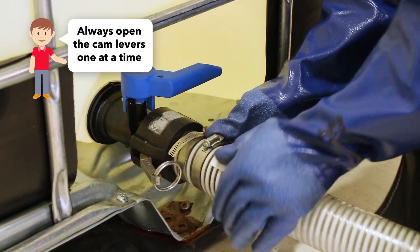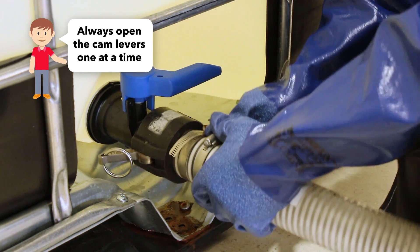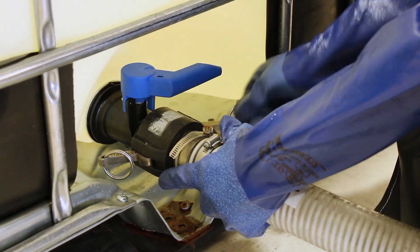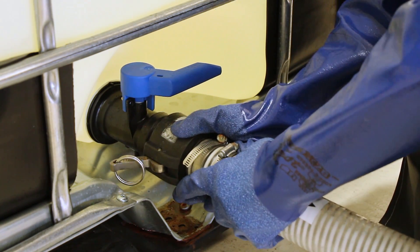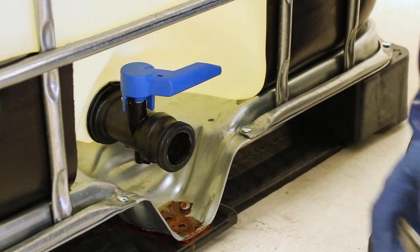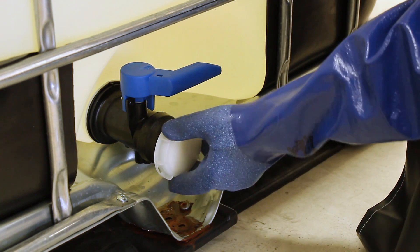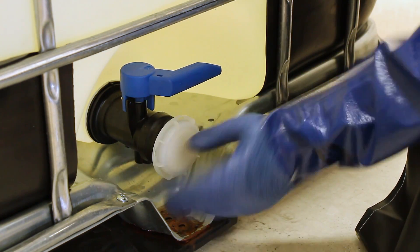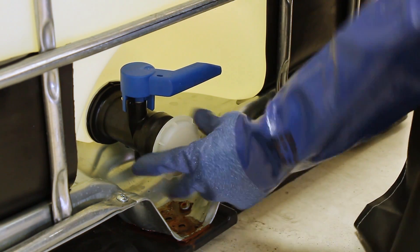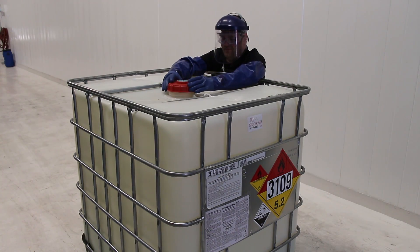Once the contents of the container have been transferred, the hose should be removed by releasing one of the cam levers at a time in case any pressure has built up in the line. Don't forget to recap the vent on top.